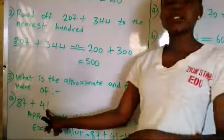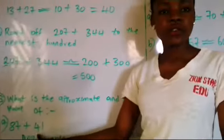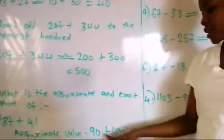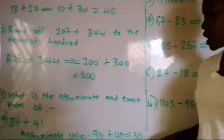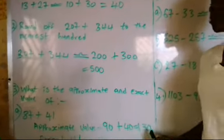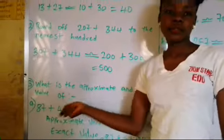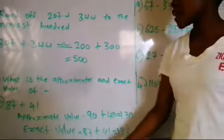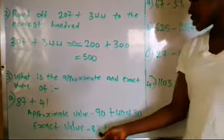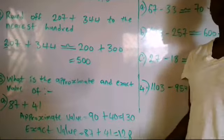Plus, 1 is not up to 5, so round it down to 0, giving us 40. 90 plus 40 will give us 130. Now 130 is the approximate value of this equation. The exact value is actually adding the numbers as they are. So we have 87 plus 41, which will give us 128.